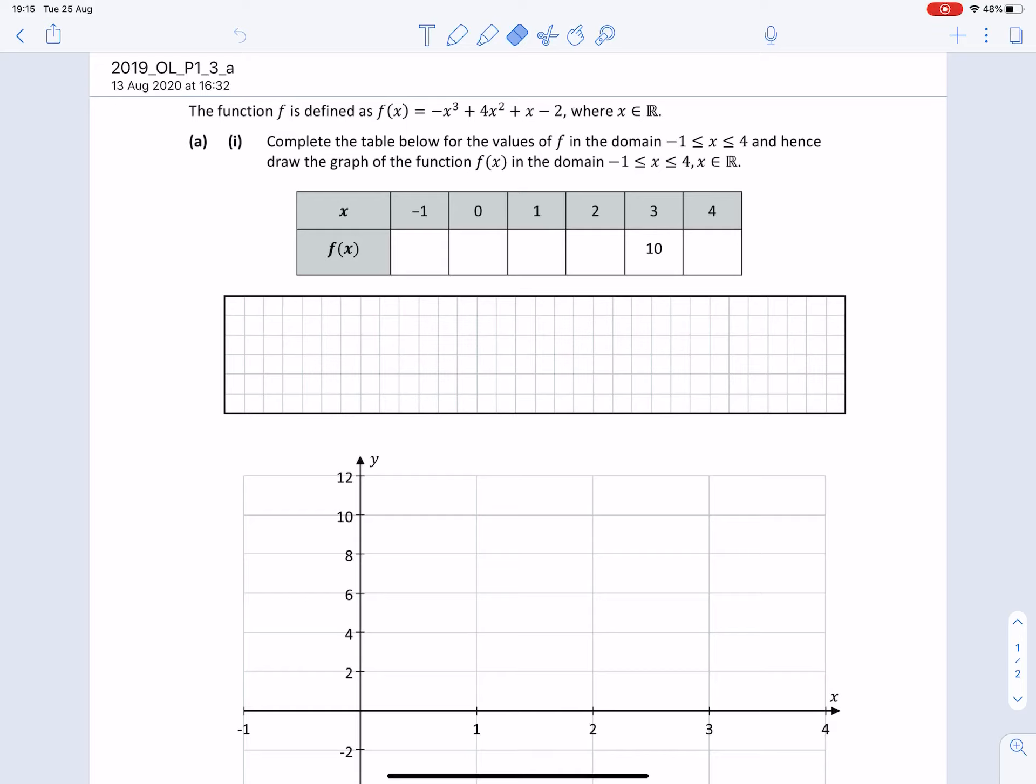f of minus 1 equals minus minus 1 cubed plus 4 times minus 1 squared plus minus 1 minus 2. If you do the calculation, you'll find that the value of this is equal to 2. So f of minus 1 equals 2.